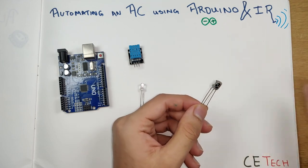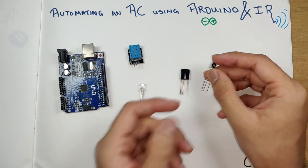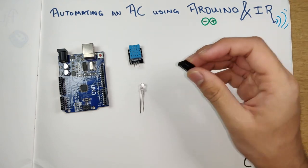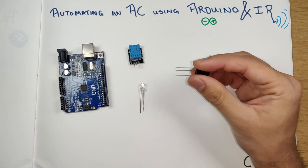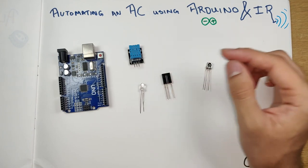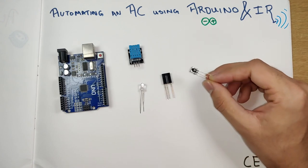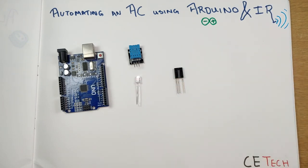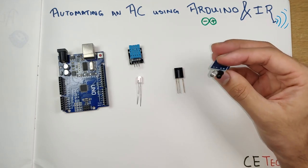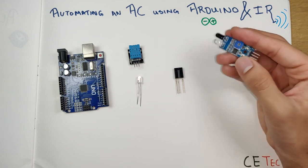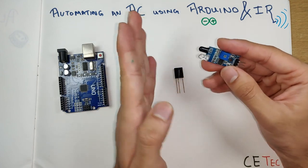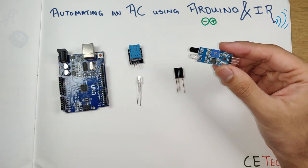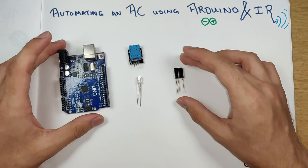We also have an infrared receiver, a three-legged component. The three pins are: voltage, ground, and signal. I personally prefer the larger version for prototyping ease, though smaller IR receivers are used in commercial devices. You might also find IR LEDs in proximity sensor modules widely used in hobbyist projects — or you can salvage one from an old remote.